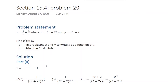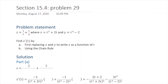Problem 29 in 15.4: you are given z as a function of x and y, and in turn x and y are functions of the variable t. You are asked to find the derivative of z with respect to t using two methods. One is writing z as a function of t by plugging in x and y in terms of t, and the second way is using the chain rule.